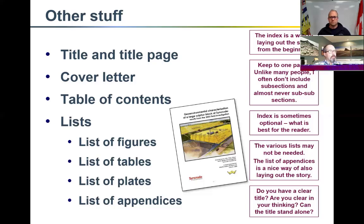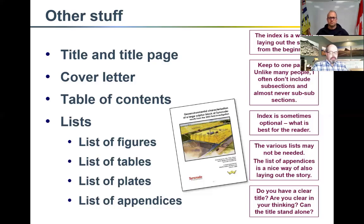Many reports will have a list of figures, tables, plates, and appendices up front. I find this clutters things — it's one in a hundred times you actually go looking for a specific figure. But for really big reports, you'll need those. I almost always include a list of appendices, as it assures the reader that all the lab data is in, say, Appendix D.